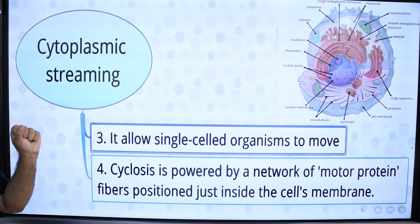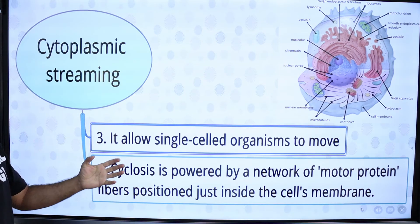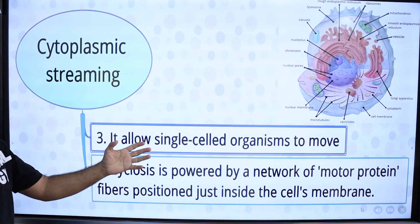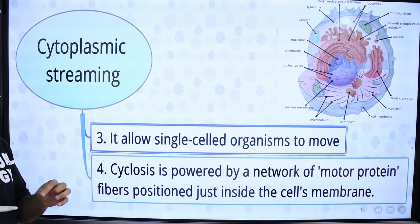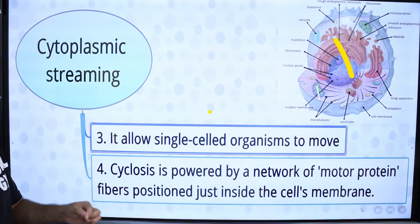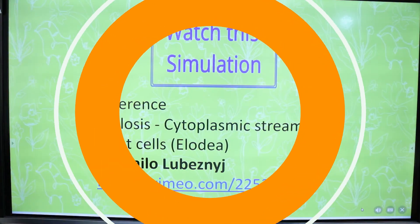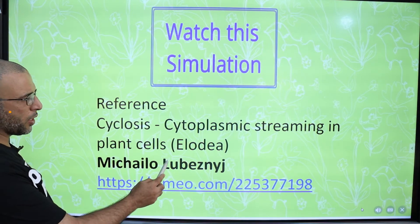Cyclosis is powered by a network of motor protein fibers positioned just inside the cell membrane. Let's watch this simulation to examine the movement of cytoplasm within a plant cell.